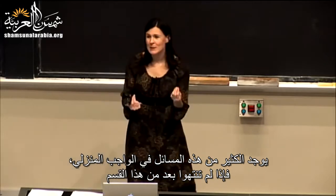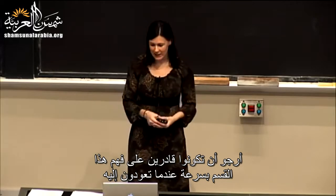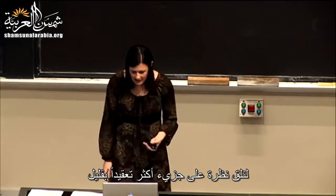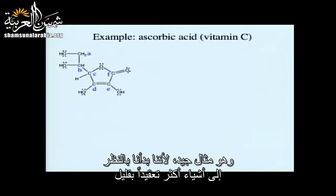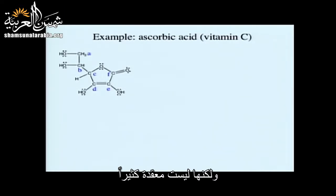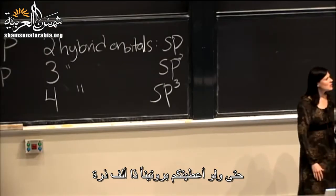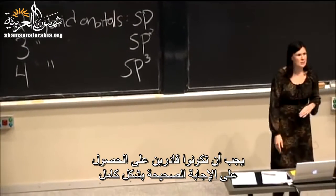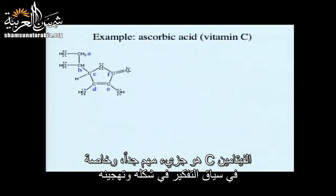This is a lot of your problems on the problem set, so hopefully you'll be able to get through that section pretty quickly. Let's take a look at a more complex molecule — ascorbic acid, or vitamin C. This is a good example because it's starting to look more complicated, but if you know how to assign hybridization this way, even if I gave you a 1,000-atom protein, you should still be able to get it completely correct.